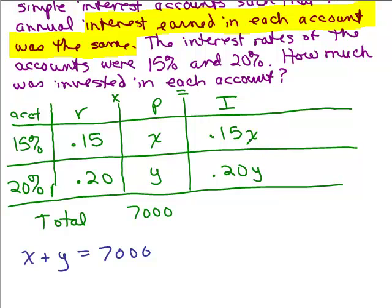The interest earned is the same. Well, that means the interest from the 15% account is actually equal to the interest in the 20% account. So I have 0.15X equals 0.20Y. So here are our two equations.